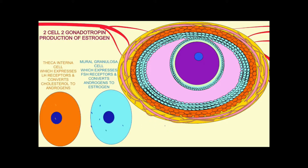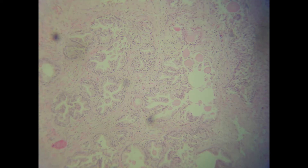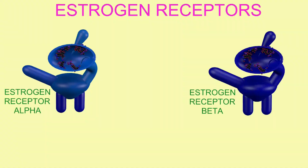The theca cells can express estrogen receptor alpha, and the granulosa cells can express estrogen receptor beta. So even though they're both responding to estrogen with estrogen receptors, they vary in which they express. In the prostate gland depicted here, the epithelium is expressing estrogen receptor beta, but the deeper stroma is expressing estrogen receptor alpha.